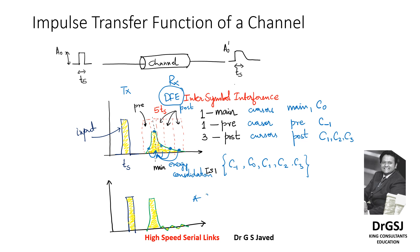The outcome is that decision-making of the symbol happens clearly, enabled by reducing the energy from post-cursor coefficients C1, C2, and C3. The more you reduce C1, C2, C3, the better the decision-making becomes to identify what kind of symbol it is — whether it is a 0 or a 1 — avoiding false decisions. To summarize the impulse transfer function of a channel: it informs us about the nature of equalization needed, the pre, main, and post cursors that arise, and how symbol decision-making is impacted.